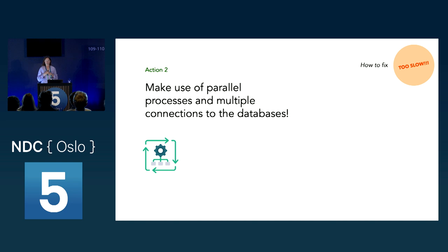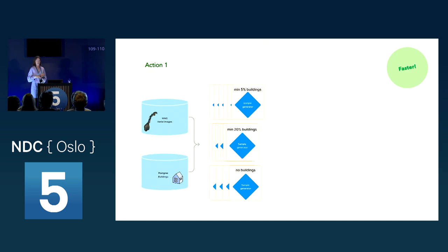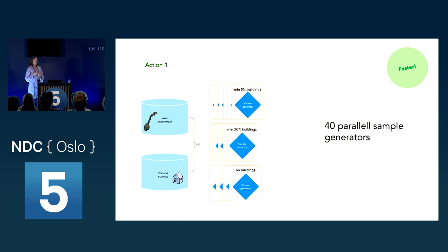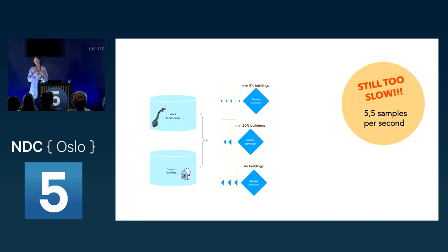Action two: make use of parallel processes and multiple database connections. Since we already have parallel processes with sample generators looking for different data types, we just add more of them looking for the same data. We add up to 40 different parallel sample generators all connecting to the databases. Even multiplying up, we only reach 5.5 samples per second — still not there.